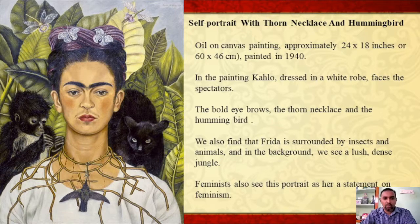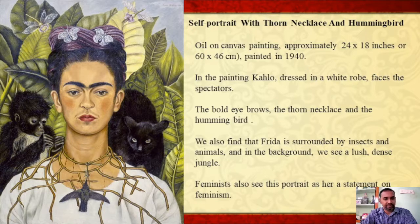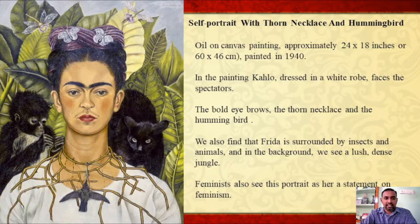In the painting, Kahlo dressed in a white robe faces the spectators with a calm and solemn expression, which could be suggestive of the fact that she was patiently enduring all the pain in her life — the physical suffering from the accident and the mental suffering from her troubled relationship with her husband. It is probably her bold eyebrows, the thorn necklace and the hummingbird tied to the necklace that attracts our attention the moment we look at the picture. The thorn necklace strangles her throat, trails down her chest like the roots of a tree, and draws blood from her neck.